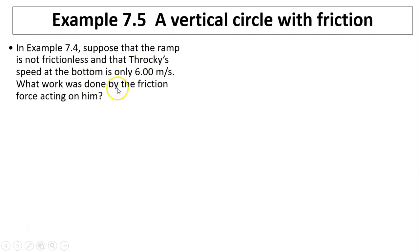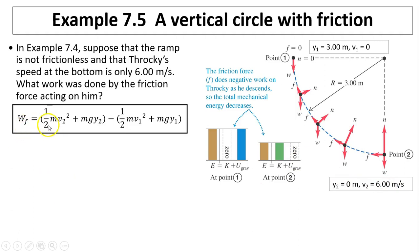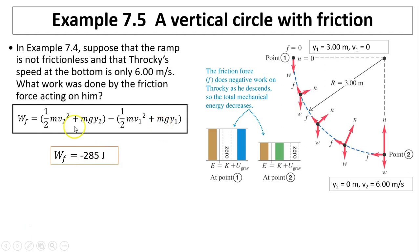Another example: in the previous scenario, suppose the ramp is not frictionless and Throcky's speed at the bottom is only 6 meters per second. What work was done by friction? Y1 equals 3, V1 equals 0, Y2 equals 0, V2 equals 6, M equals 25 kilograms. Work done by friction equals the change in mechanical energy. Substituting everything, work done by friction equals negative 285 joules. The negative value confirms that total mechanical energy has decreased — there is less energy at the bottom than at the top.